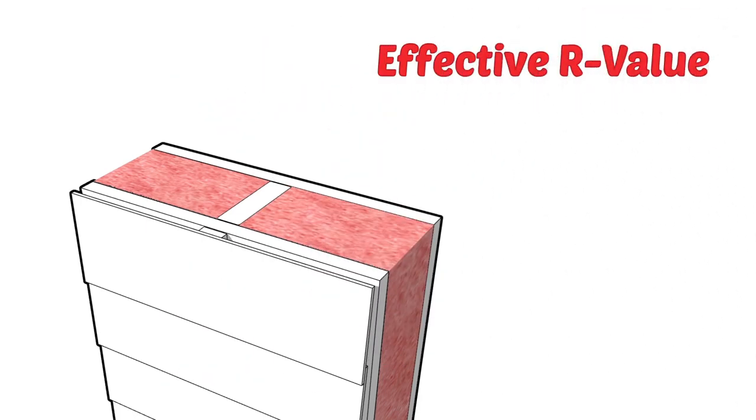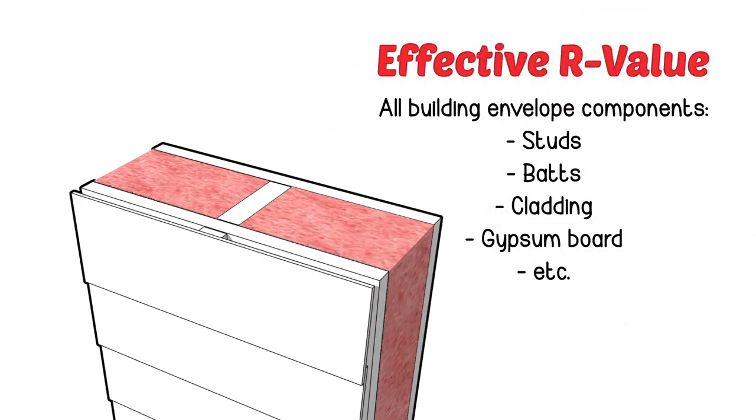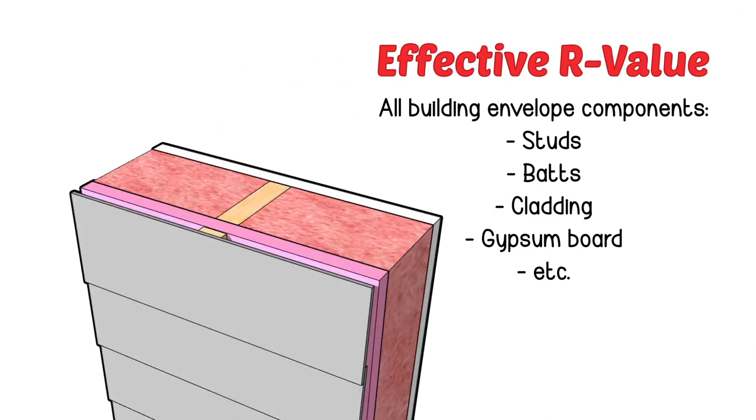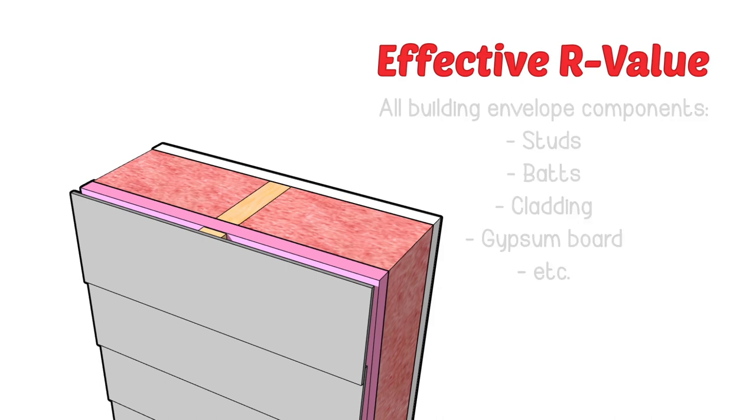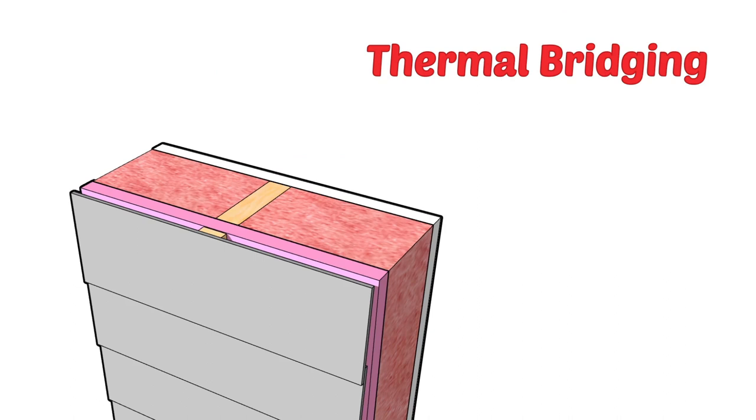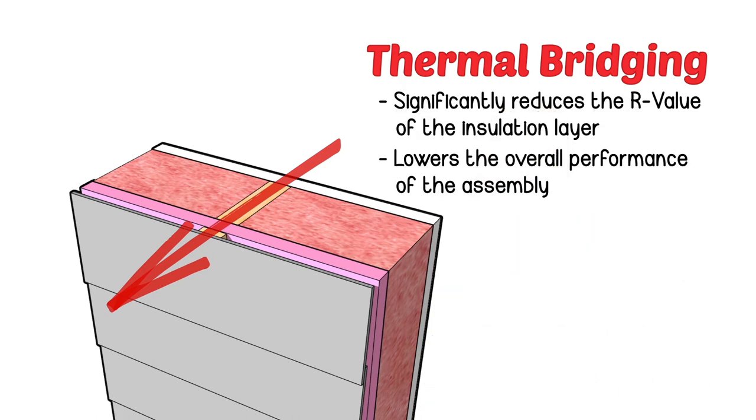Effective R-Value, on the other hand, takes into account all the components of the building envelope, such as studs, bats, cladding, and gypsum board. The industry today is moving toward Effective R-Value. Thermal bridging is the main reason why the language has changed. Thermal bridging occurs when a conductive material creates a path for heat flow to bypass the insulation layer, for instance a wood or steel stud. This shortcut significantly reduces the R-Value of the insulation layer and lowers the overall performance of the assembly.